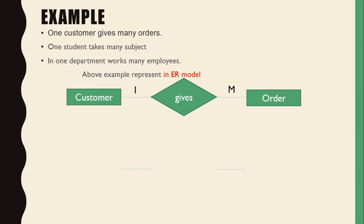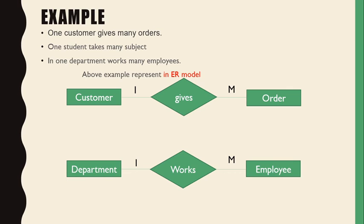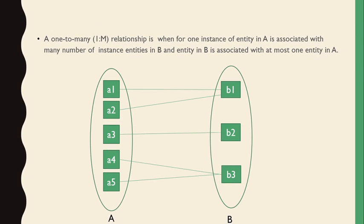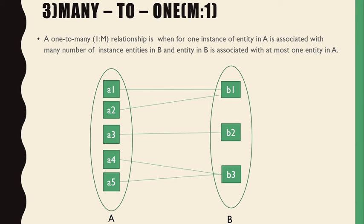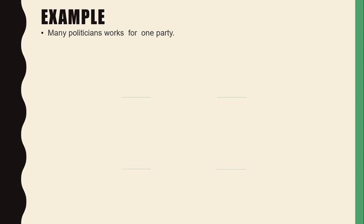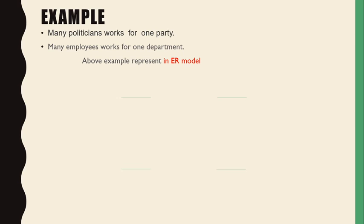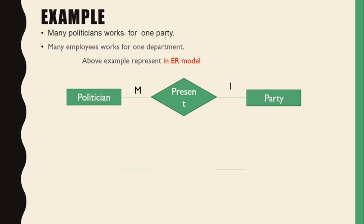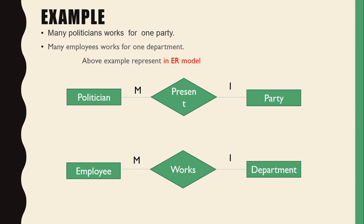In the ER model, one-to-many is represented as: one customer gives many orders, one department has many employees. The third type is many-to-one. In a many-to-one relationship, many instances of entity A are associated with one instance in entity B — it is exactly opposite to one-to-many. For example, many politicians work for one party, many employees work for one department.